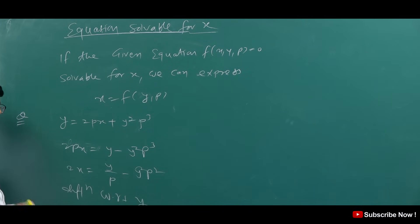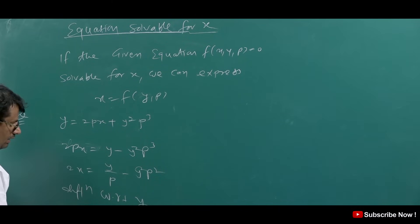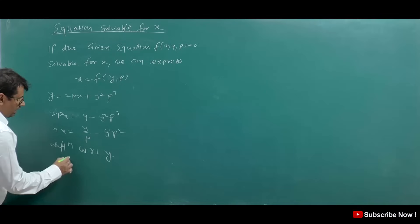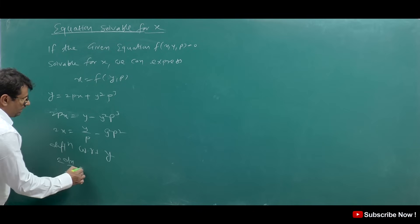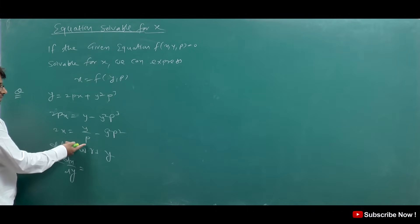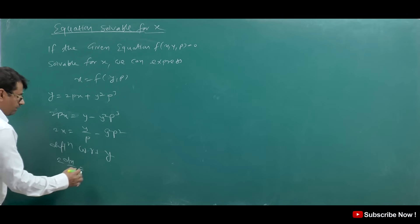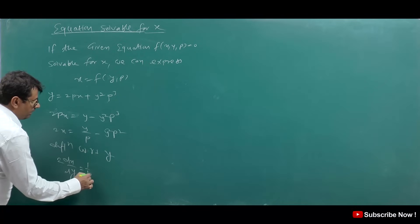When Solvable for Y is called, we differentiate with respect to X. But here, we differentiate with respect to Y. So DX/DY appears on the left side. Here, Y and 1/P also appear. So, doing it all the way, we get 1/P here.